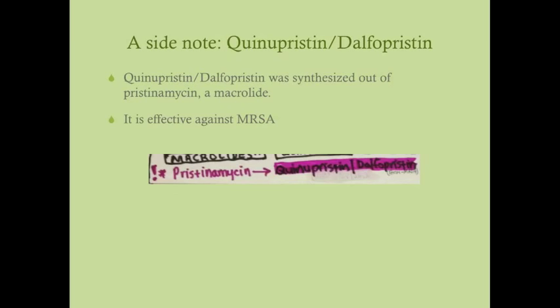Quinupristin-dalfopristin was developed from pristinomycin, which is a macrolide, but is not used as one. Research found that two byproducts of pristinomycin can be combined into a single drug — quinupristin-dalfopristin — that is effective against MRSA. So quinupristin-dalfopristin is another anti-MRSA drug.